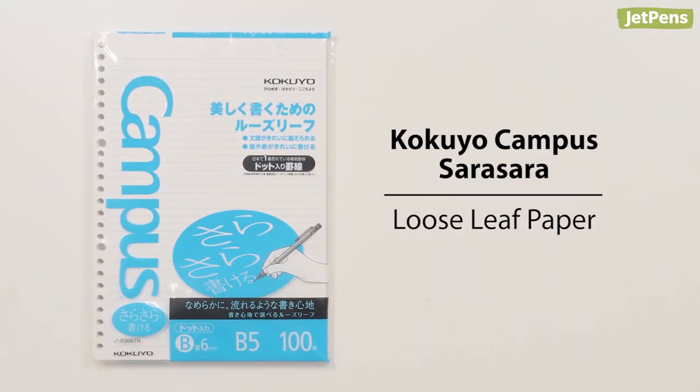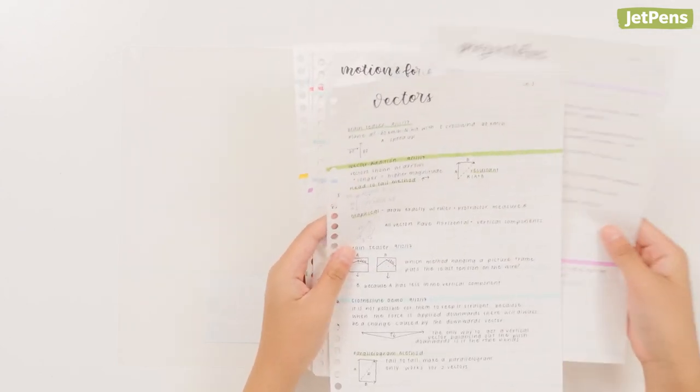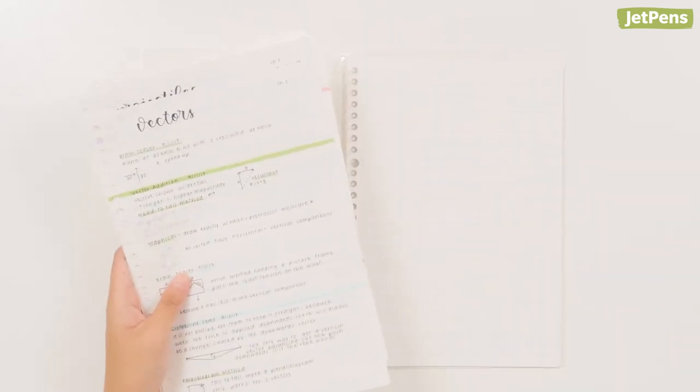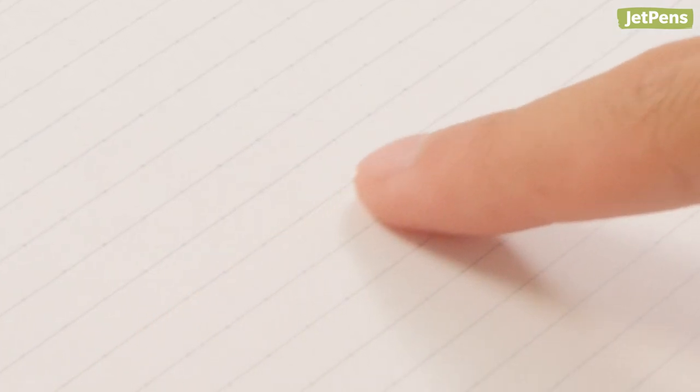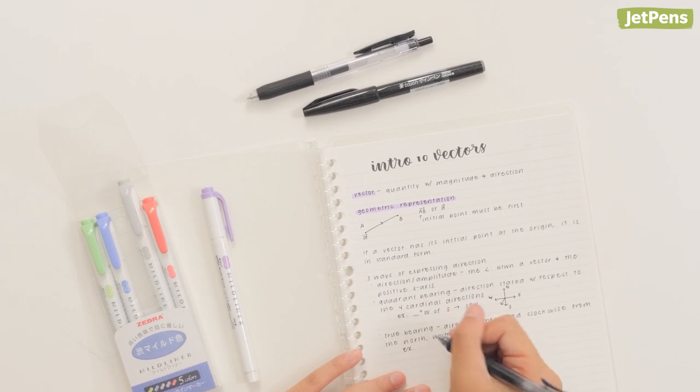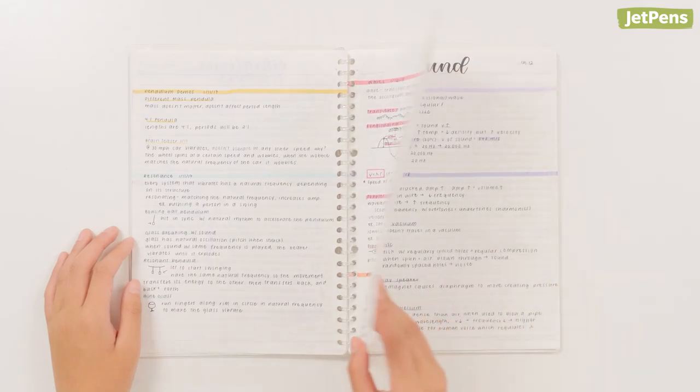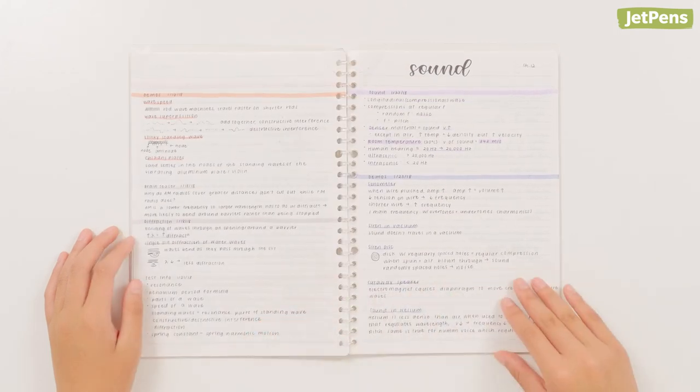My paper of choice is the Kokuyo Campus Sarasara in the 6mm dotted line rule. I prefer loose leaf paper over notebooks because I can easily reorganize my notes in the unbound format. This paper has a dot grid along with horizontal lines, so it's easy to take organized notes. The dot grid allows for neat vertical alignment but doesn't look as crowded as a traditional grid. The Sarasara paper is very smooth allowing for faster writing. It's also resistant to bleed through, so the notes on both sides are easy to read.